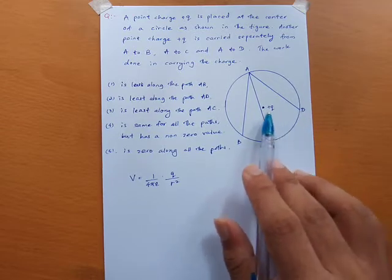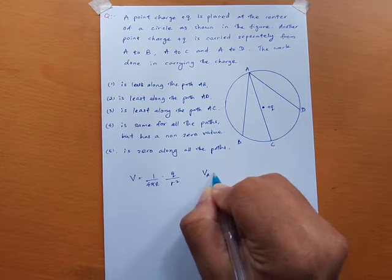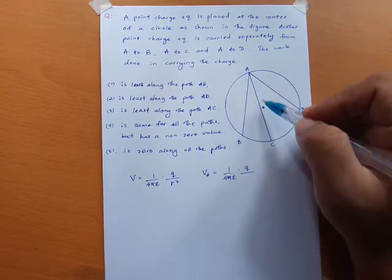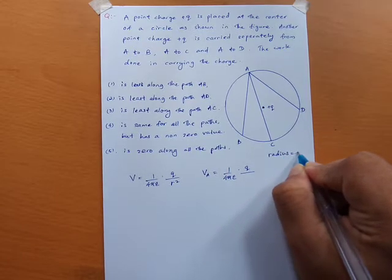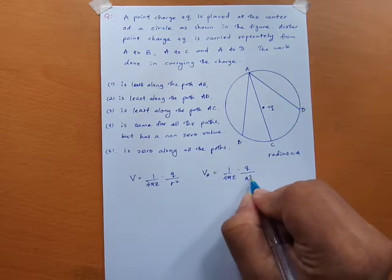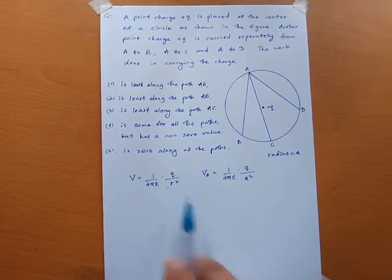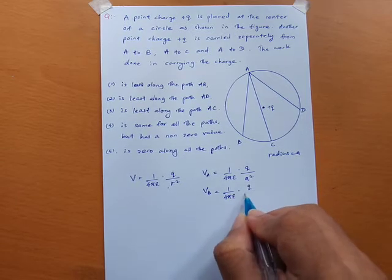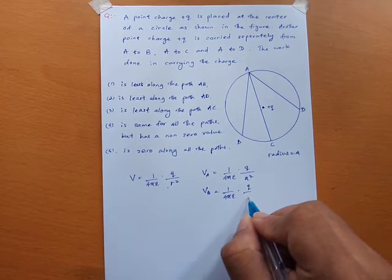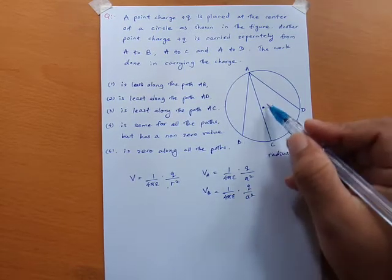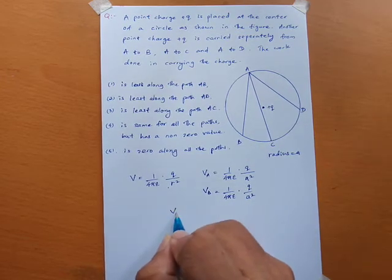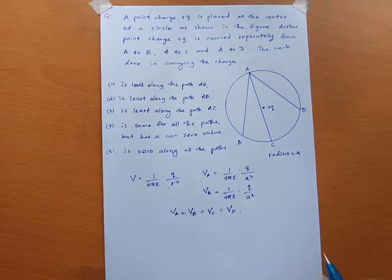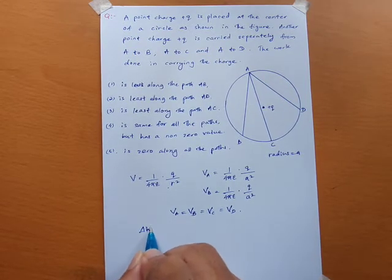The potential at point A is V_A = (1/4πε₀)(Q/a²). Similarly, V_B = (1/4πε₀)(Q/a²), the same distance. So we can see that V_A = V_B = V_C = V_D — all four points have the same electric potential.